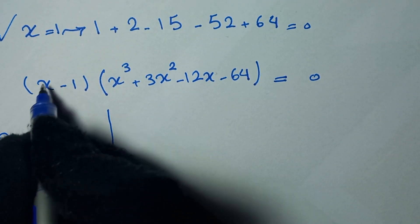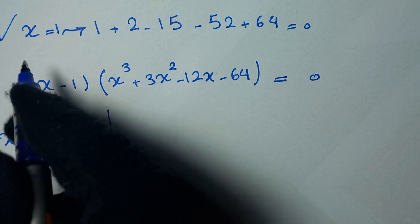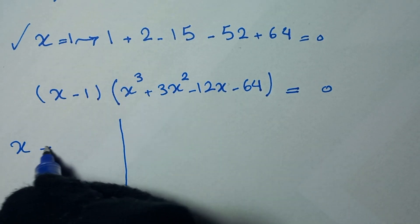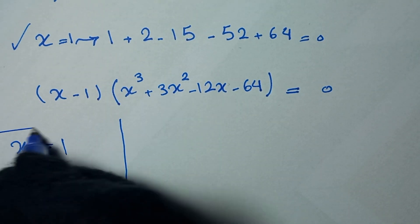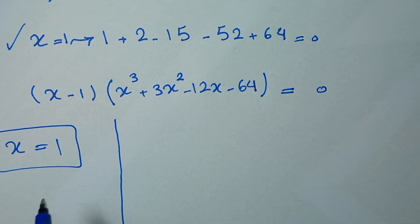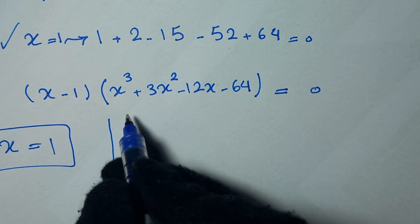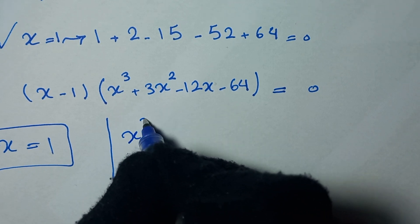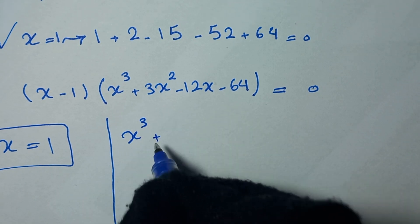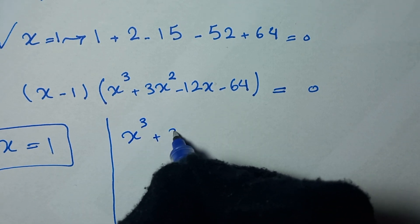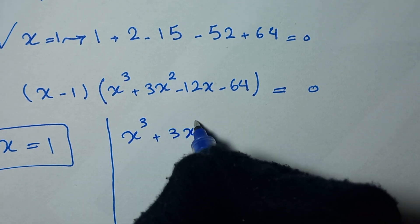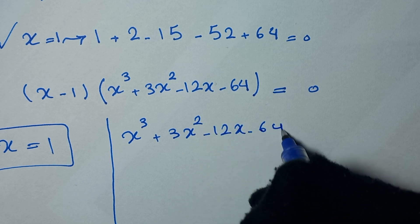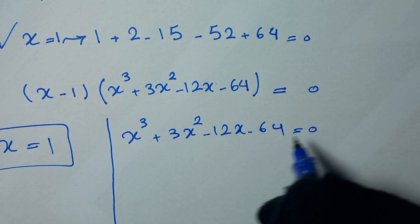x minus 1 equals 0, so x equals 1 is our first answer. And the other factor gives x cubed plus 3x squared minus 12x minus 64 is equal to 0.